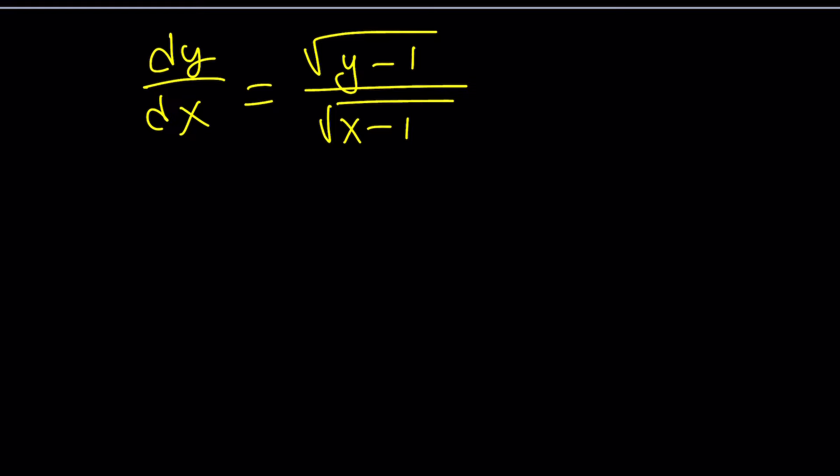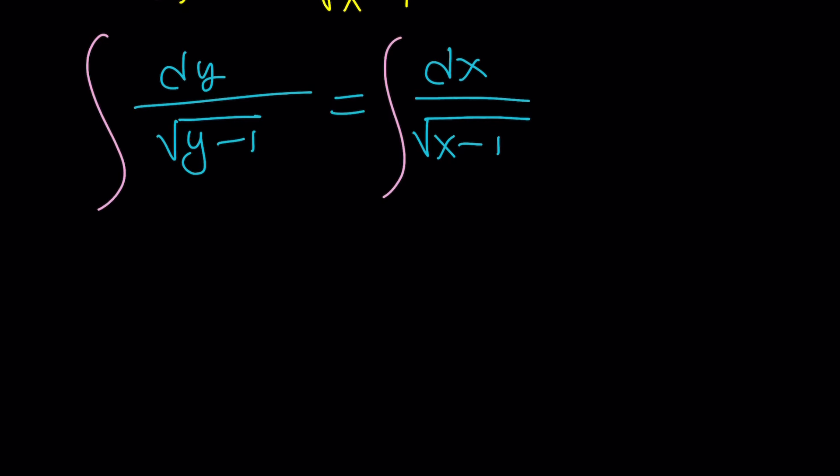So, what should we do? Divide by root y minus 1 and multiply by dx. In other words, separate the variables so that you can have the y's on one side and the x's on the other. Now, at this point, you separated the variables. What is the next step? Integrating both sides. And when you integrate, of course, you're going to integrate on the left with respect to y, on the right with respect to x, and that's perfectly fine, because those are separate d's.